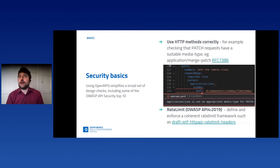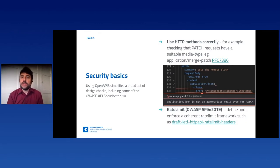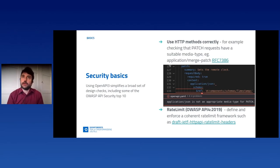OpenAPI allows for further checks, such as identifying inappropriate media types for specific methods — for example, PATCH. If you're curious about that, you can have a look at RFC 7386. The point here is that given a specification, we can identify non-compliant behavior automatically.